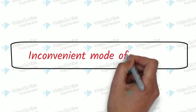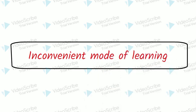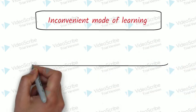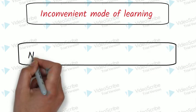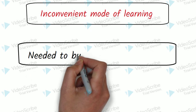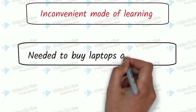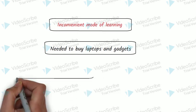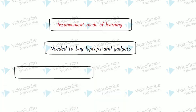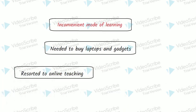Yes, that's right. They needed to buy laptops and gadgets. And why do they need to buy laptops and gadgets? It's because they resorted to online teaching. And why is that? Because the schools have closed.